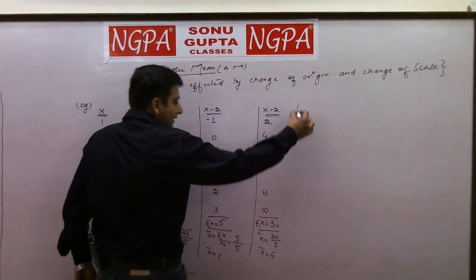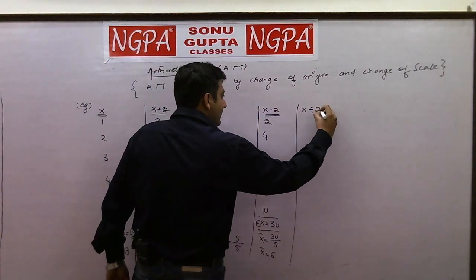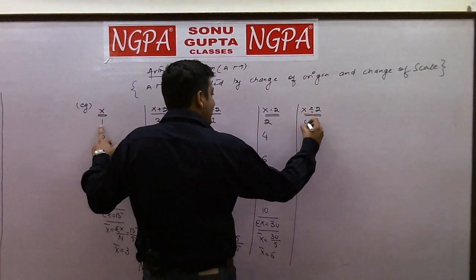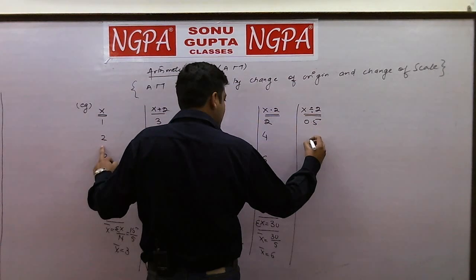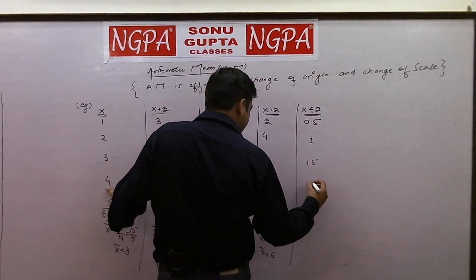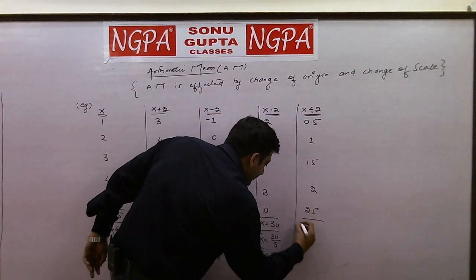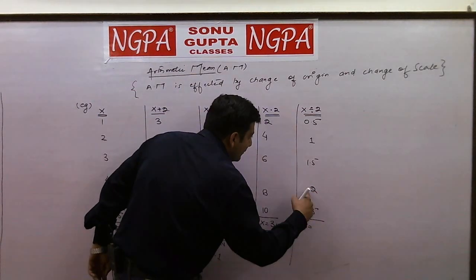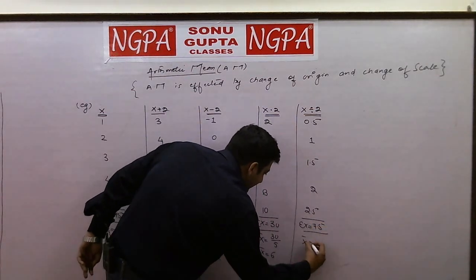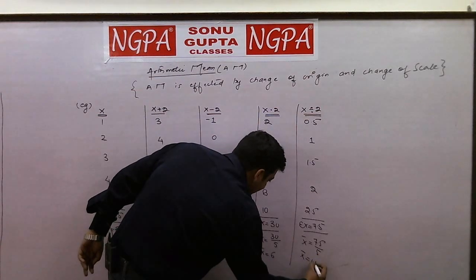Similarly, just as we multiplied, let's divide by 2. 1 divided by 2 is 0.5, this is 1, this is 1.5, this is 2, and this is 2.5. And calculating the total, this is 4 plus 2, 6 plus 7, 7.5. X-bar is again 7.5 divided by 5, which is 1.5.